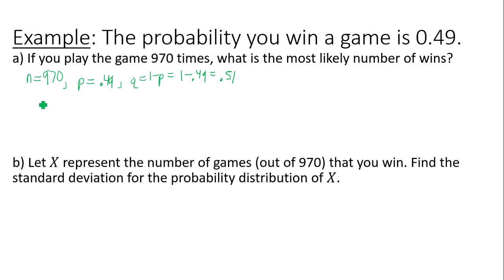We will use this information now to calculate the mean and standard deviation. The mean, or the expected number of wins if I was to play this game 970 times, is number of trials times the probability of a success: 970 times 0.49, which is 475.3. So it would be expected that you would win 475.3 of those games.